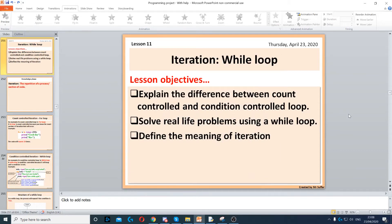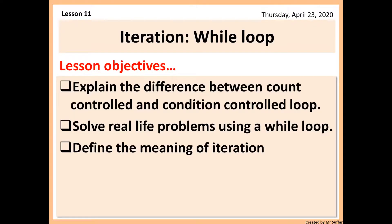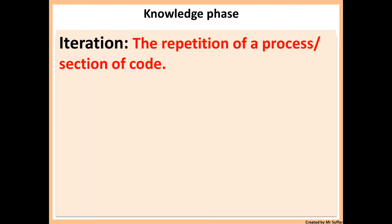For this lesson, we're going to look at while loops. Firstly, a while loop is part of iteration. Iteration is the repetition of a process or a section of a program. Whenever you have a program that repeats, there is an iteration there.